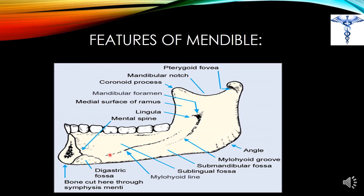The mylohyoid line starts from the mental spines and ends below the third molar teeth. Above the anterior portion of the mylohyoid line is the sublingual fossa for the sublingual gland, and below the posterior portion of the mylohyoid line is the submandibular fossa, which is for the attachment of the submandibular salivary gland.